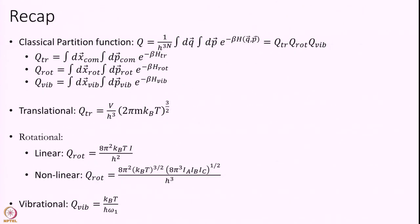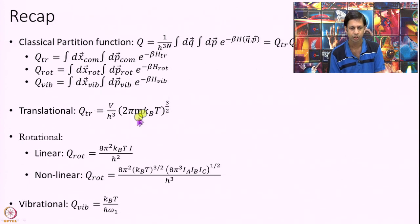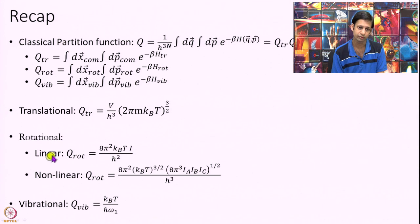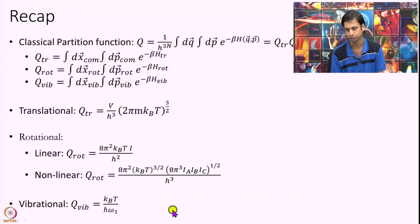Just a quick recap of what we have covered: we defined the partition function as an integral over phase space divided by h to the power of 3n of e to the power of minus beta H. We separated the Hamiltonian into translation, rotation and vibration, giving us q_translation, q_rotation and q_vibration. The translational partition function was calculated explicitly. For rotational we showed two different forms for linear versus non-linear molecules. For vibrational, the partition function for one vibration was derived, and for multiple vibrations with different frequencies omega_1, omega_2, omega_3, you simply multiply the respective partition functions.